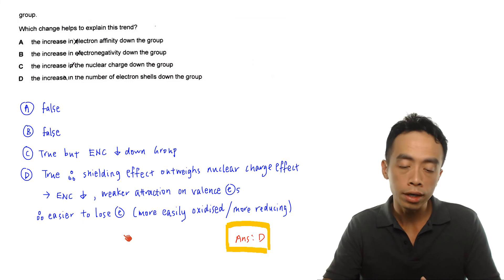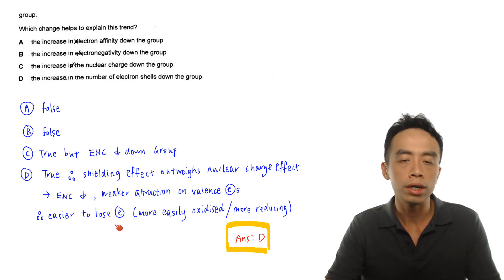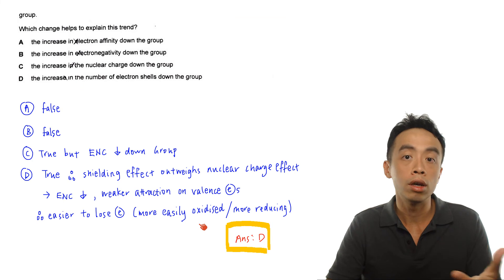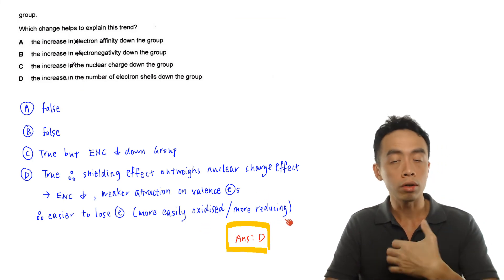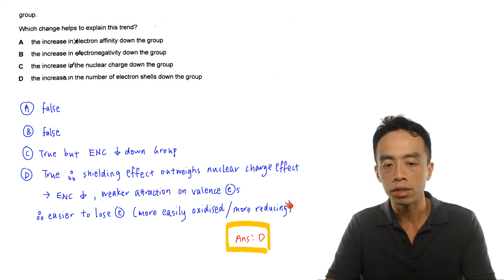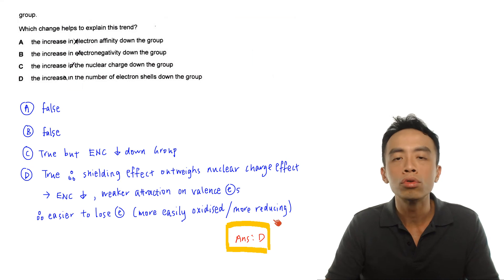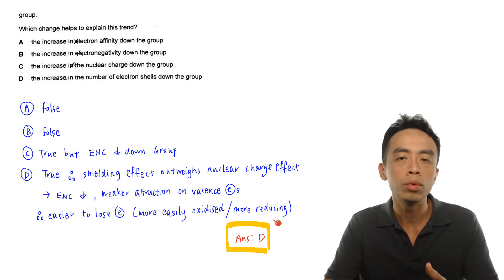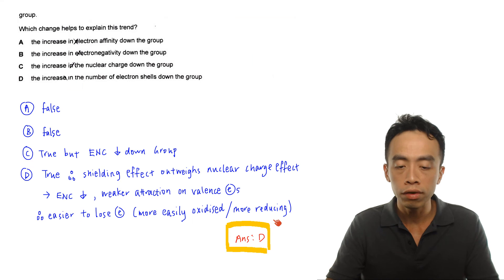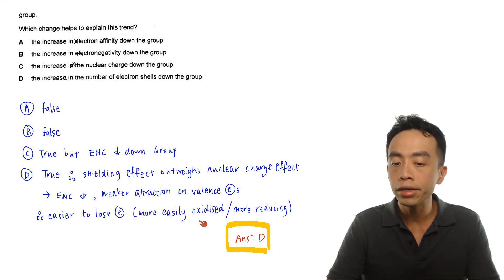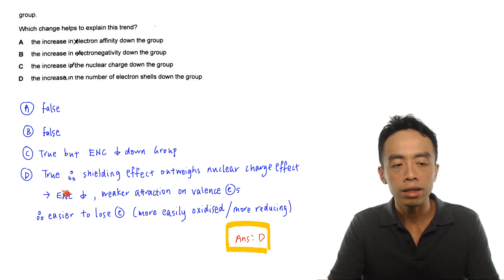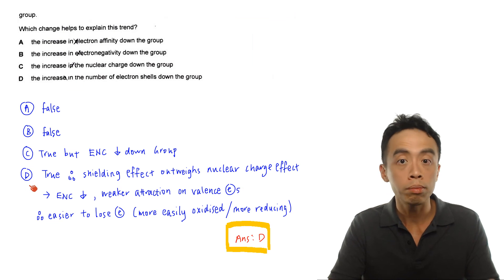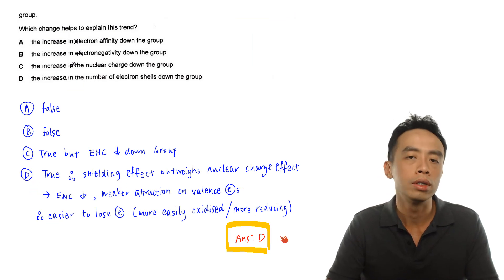Since it is easier for the metal to lose electrons going down Group 2, we can say the metals are more easily oxidized, more reactive, or more reducing — they are stronger reducing agents. Running through Options A, B, C, D, clearly the answer that explains the reactivity of Group 2 metals is Option D.